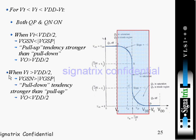When Vi is greater than Vdd by 2, the Vgs of N is greater than Vgs of P, and the pull-down tendency is stronger than the pull-up, so VO is less than Vdd by 2.